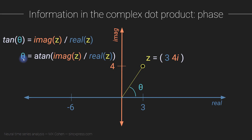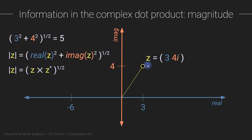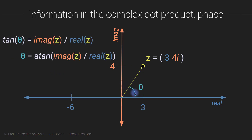To sum up: computing a complex dot product is exactly the same procedure as computing the real valued dot product, except the result is a complex number. From that complex result we can extract several pieces of information. The two we are most interested in are the magnitude — the distance from the origin — and the phase, which is the angle relative to the positive real axis.